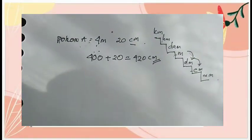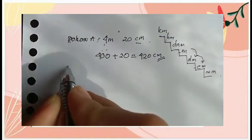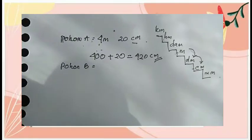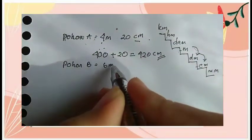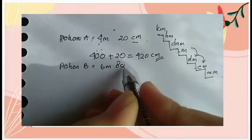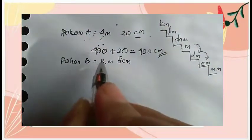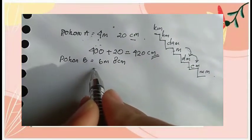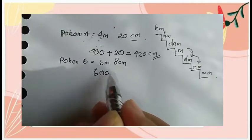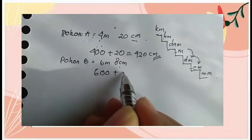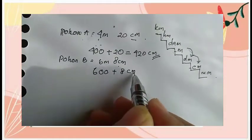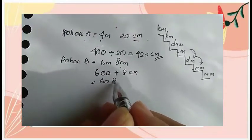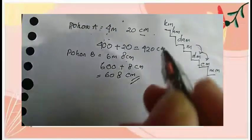Seperti ini ya, bisa ya teman-teman. Kemudian pohon B, yaitu enam meter delapan sentimeter. Dari meter ke sentimeter tadi turun satu, dua, dua tangga. Jadi enam, nolnya ditambah dua, enam ratus ditambah delapan sentimeter. Karena delapannya sudah sentimeter, jadi enam ratus delapan sentimeter hasilnya.